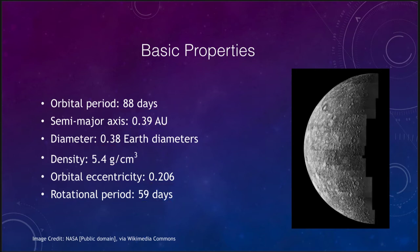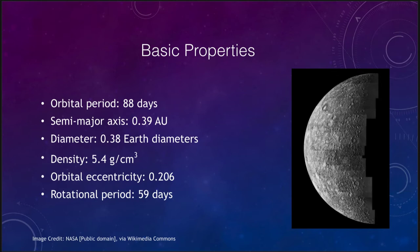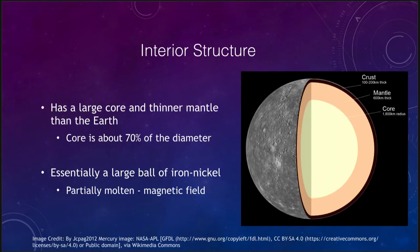Now let's look at the interior of Mercury and what we know about it. First, let's look at the image taken by the Mariner spacecraft that flew by Mercury back in the 1970s. We can see that overall it looks a lot like our own Moon — very heavily cratered. One thing we notice that's missing is the Maria; we do not see any Maria on Mercury. Our studies of the interior are very difficult because we have never landed on its surface, so we have to make estimates by comparing it to what we know about the Earth and other planets.